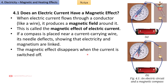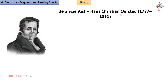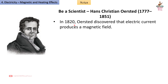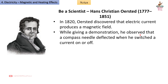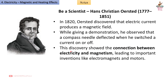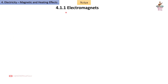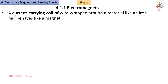The magnetic effect disappears when the current is switched off. Be a Scientist: Hans Christian Oersted (1777–1851) discovered in 1820 that electric current produces a magnetic field. While giving a demonstration, he observed that a compass needle deflected when he switched a current on or off. This discovery showed the connection between electricity and magnetism, leading to important inventions like electromagnets and motors.